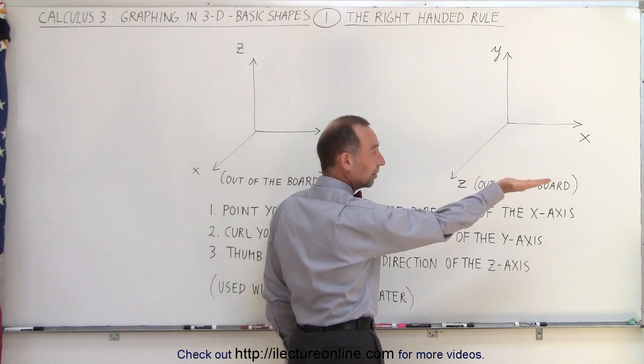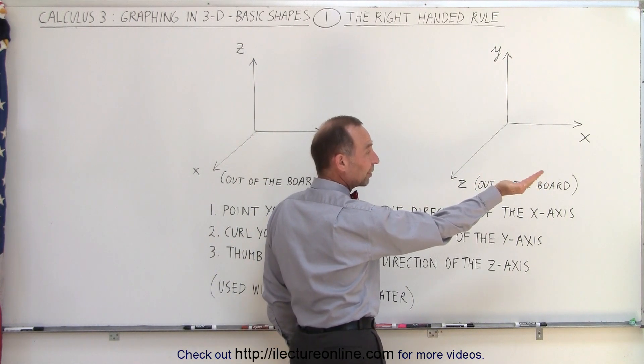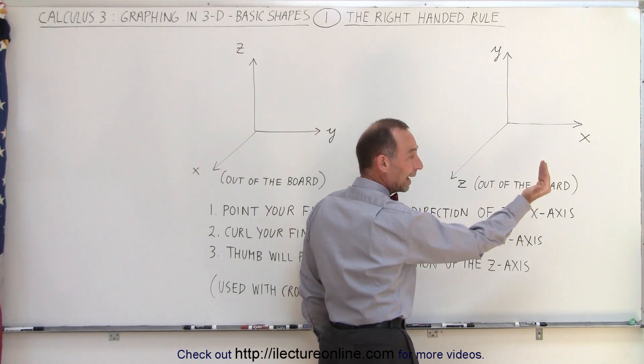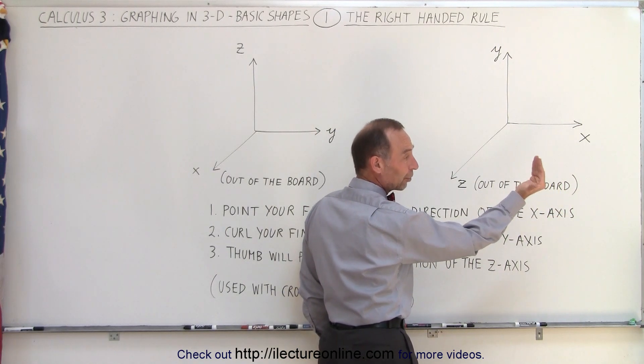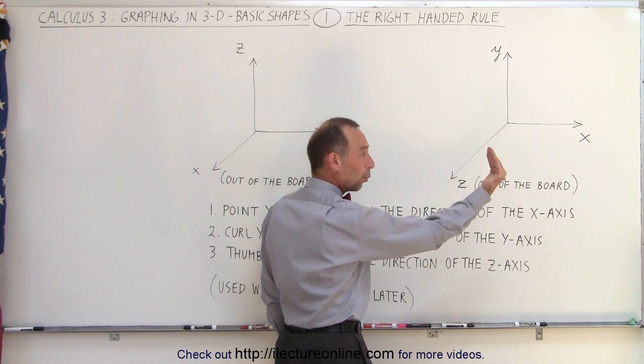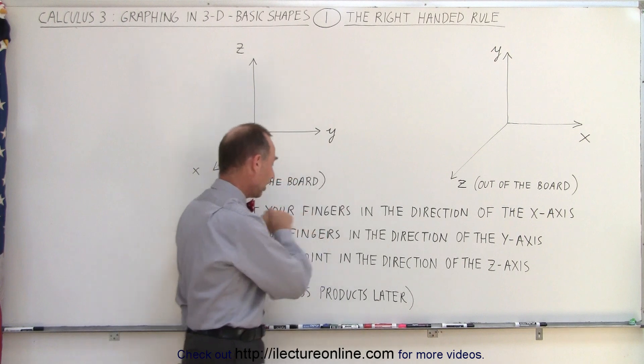So here we need to turn our hand this way, and now we're going to curl our fingers in the y-direction. So we point in the x-direction, then we curl our fingers in the y-direction, and then if we stick out our thumb, our thumb will point in the direction of the z-axis. So we have x, y, z, and that's exactly what we want to do here.